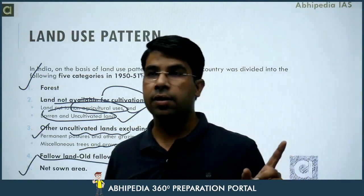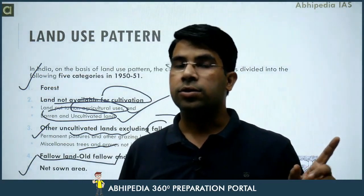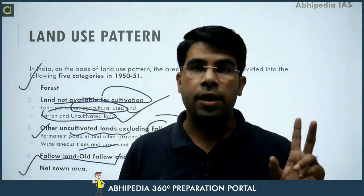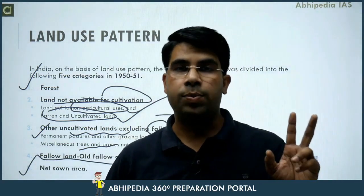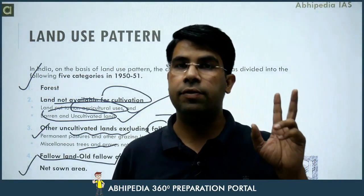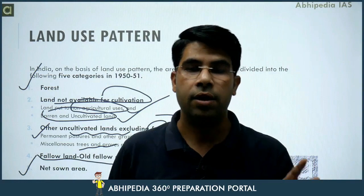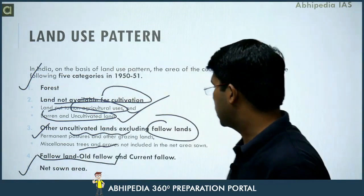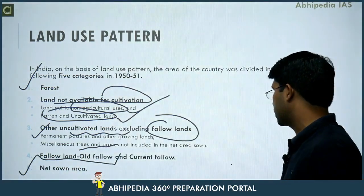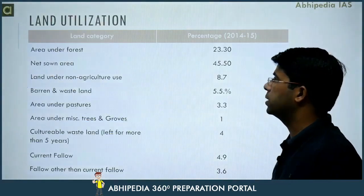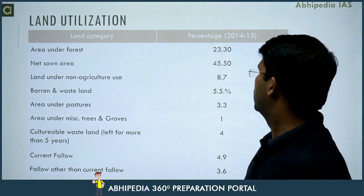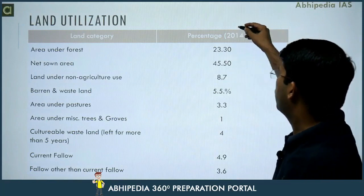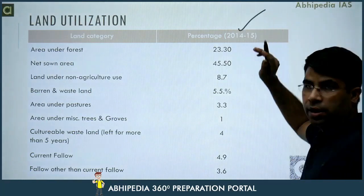Fallow land is cultivated in alternate years. We will classify these categories. If we talk about the pattern of utilization here, this is 2014-15 data — the latest available.